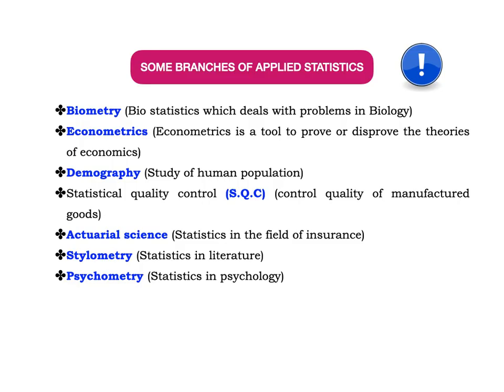Some branches of applied statistics include biometry or biostatistics, which deals with problems in biology; econometrics, a tool to prove or disprove theories of economics; demography, the study of human population; statistical quality control, which controls the quality of manufactured goods; actuarial science, which is statistics in the field of insurance; stylometry, statistics used in literature; and psychometry, statistics used in psychology.